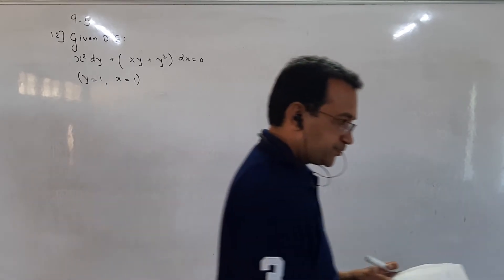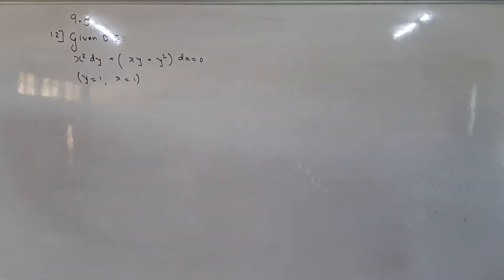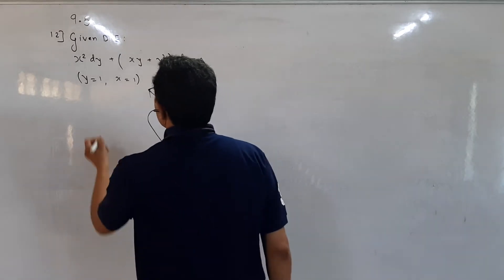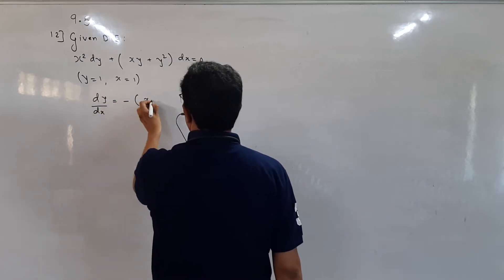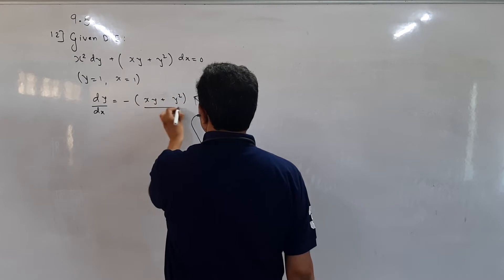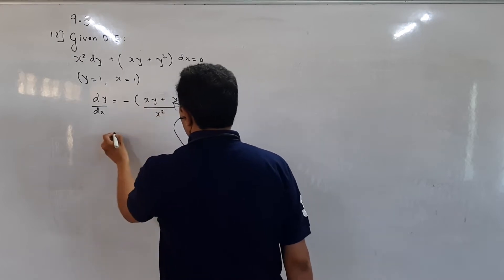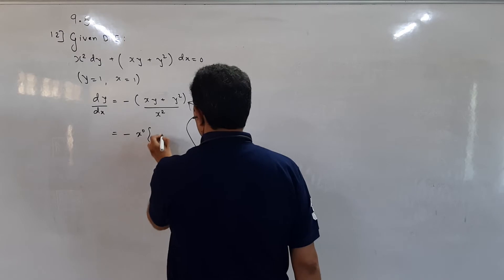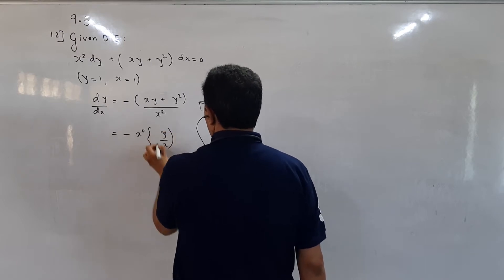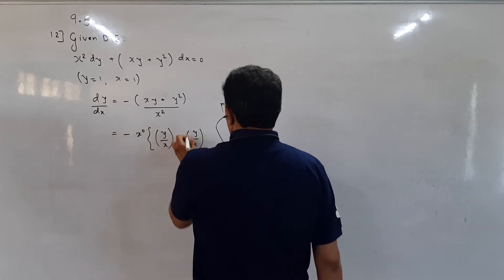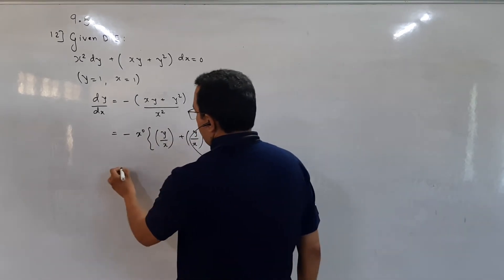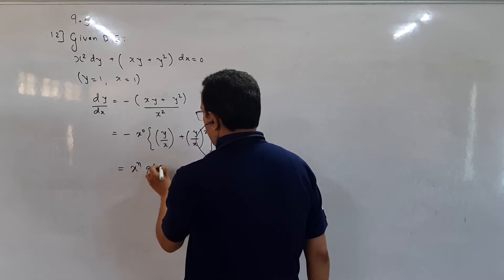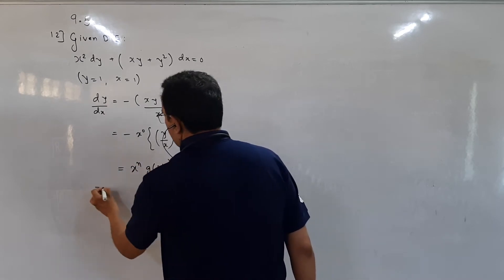Okay students, let us go for the method. dy/dx is equal to minus of (xy plus x squared) upon x squared, so this equals minus of x raised to 0 into (y/x plus y/x whole square). This is of the type x raised to n times g(y/x), so this is homogeneous of degree 0.